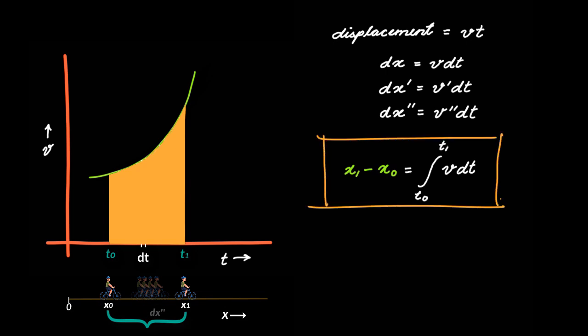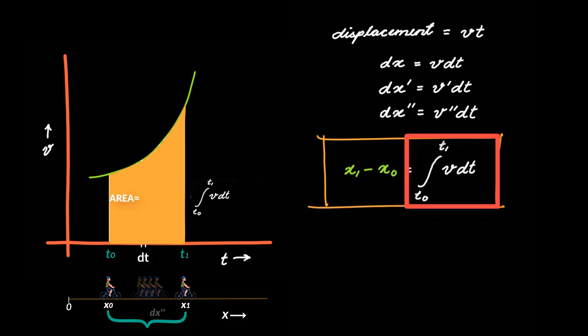Here v is the velocity at any time t between t naught and t1, and x1 and x naught are the respective positions. So this expression is nothing but the value of the area under this curve between t naught and t1. Speaking a little more mathematically, the right side of the equation is called a definite integral, which in simple words means that it gives a numerical result.